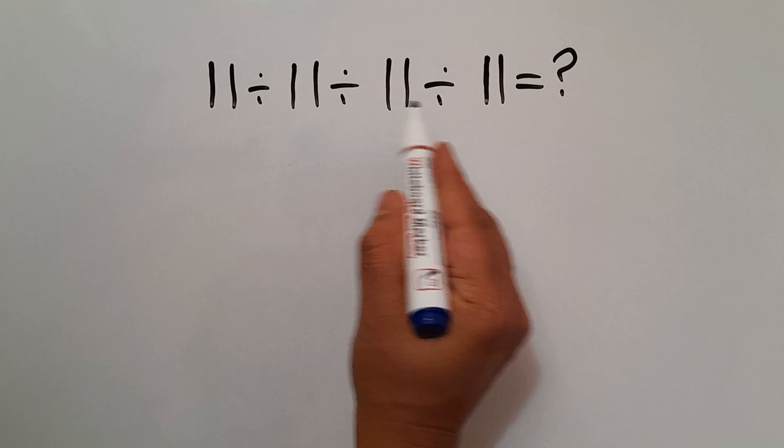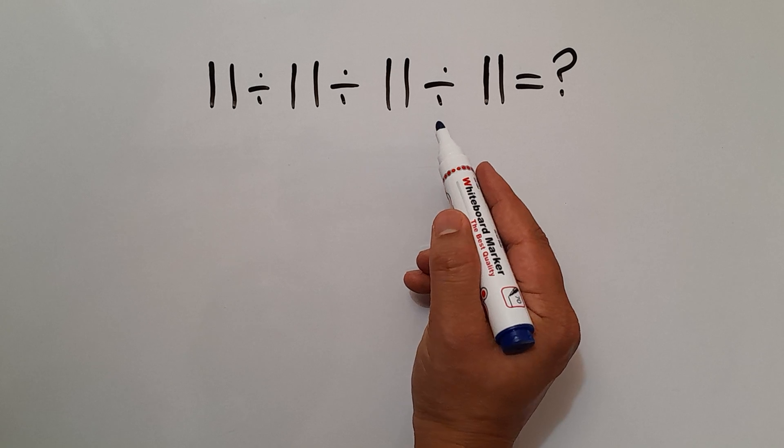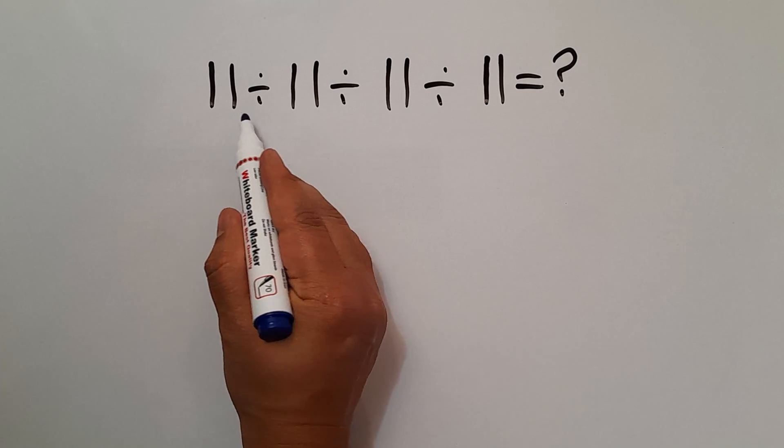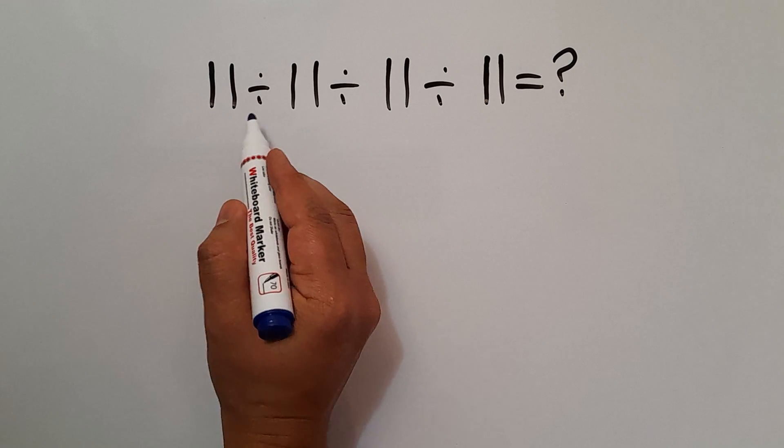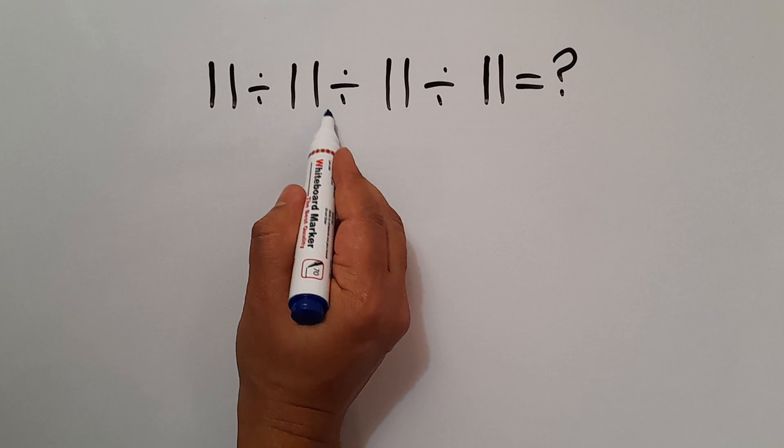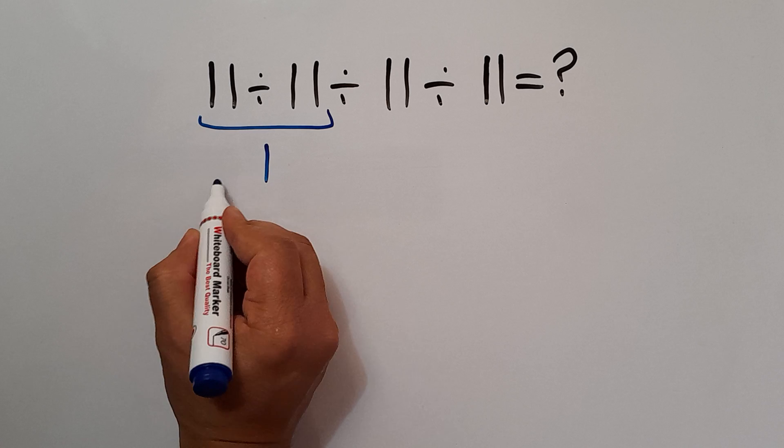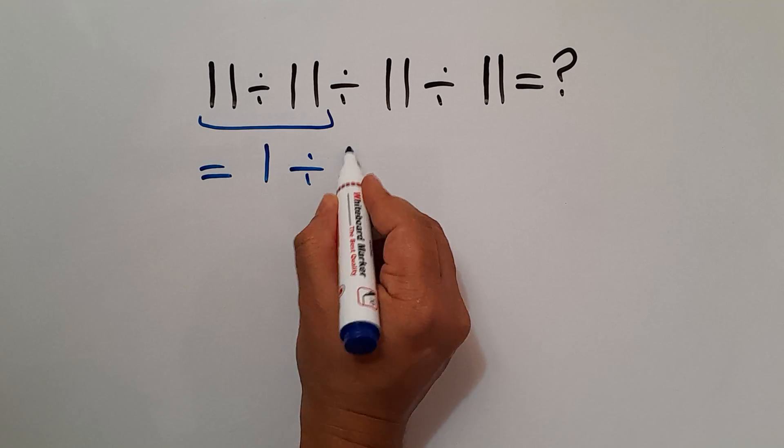When we have more than one division in one expression, we have to work from left to right. So first, this division: 11 divided by 11 gives us 1. So 1 divided by 11 divided by 11.